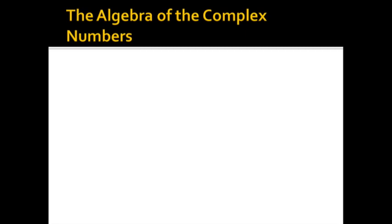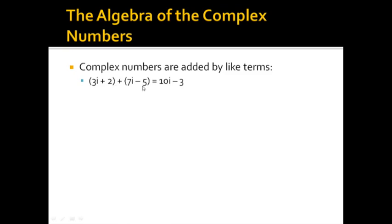The algebra of the complex numbers. Now, the algebra of the complex numbers in some ways is very similar to the algebra you're used to, but in some ways you have to be careful. So complex numbers are added by like terms. So let's say we got 3I plus 2, and we add 7I minus 5. So we add two complex numbers together. And the way we do that is we do 3I plus 7I, and we make 10I. We're adding like terms. And then 2 plus negative 5 make negative 3. So we got 10I minus 3 as the result. We're adding like terms together. And so if we add two complex numbers together, the result is a complex number.